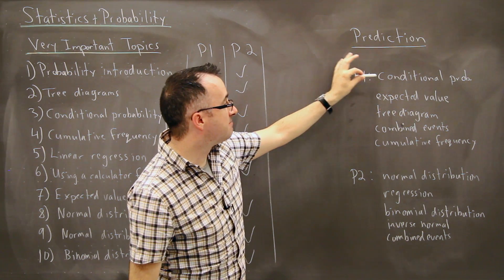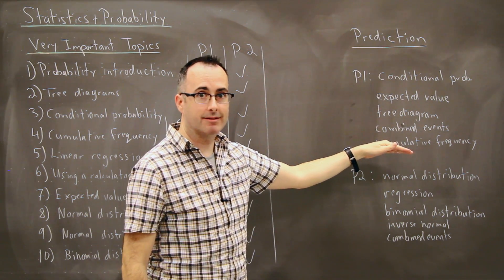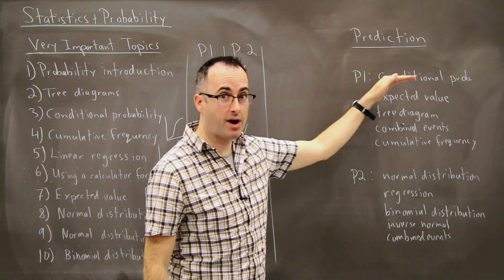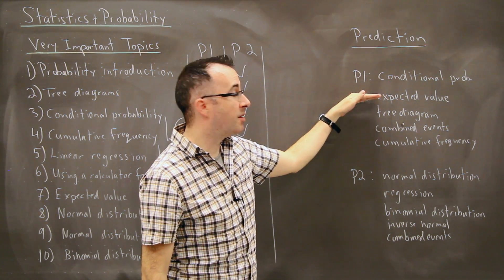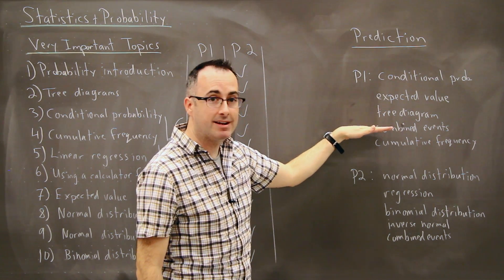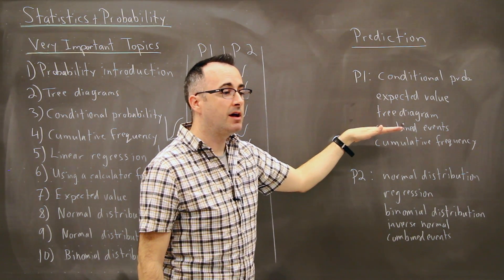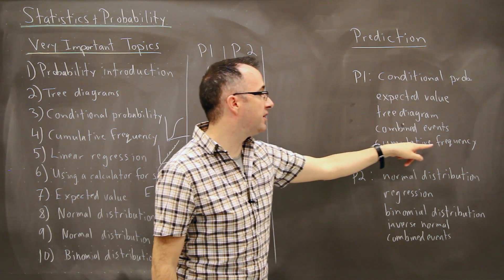In paper one it's most likely going to be, this is in order of probability here. So we have conditional probability shows up quite often on paper one. So that's the most common thing. Next most common is expected value. After that it's tree diagrams, then combined events, things like independent events or mutually exclusive. Then we have cumulative frequency diagrams.